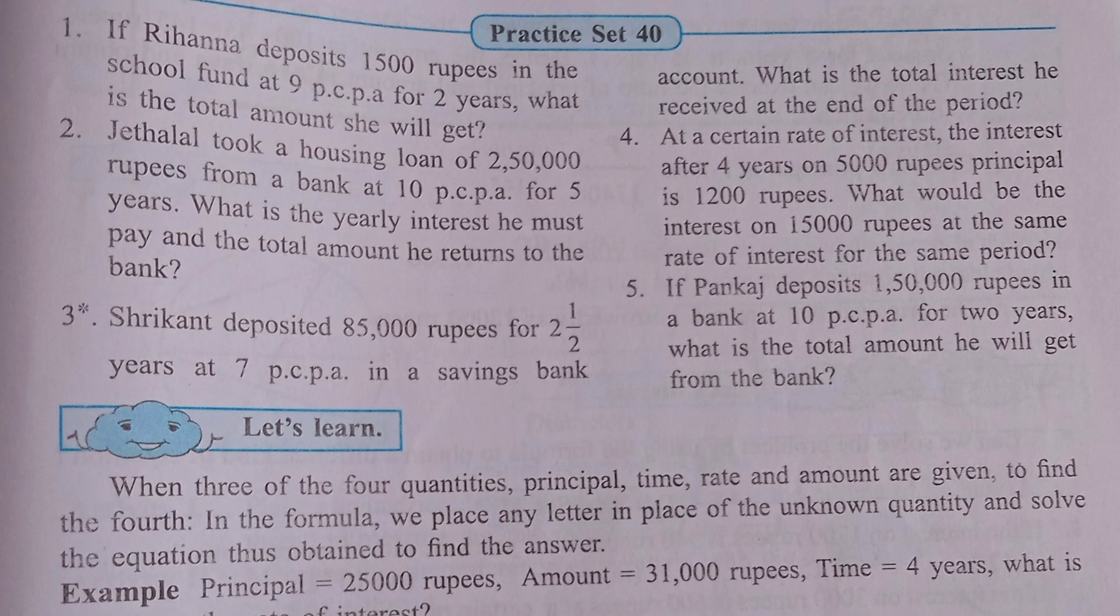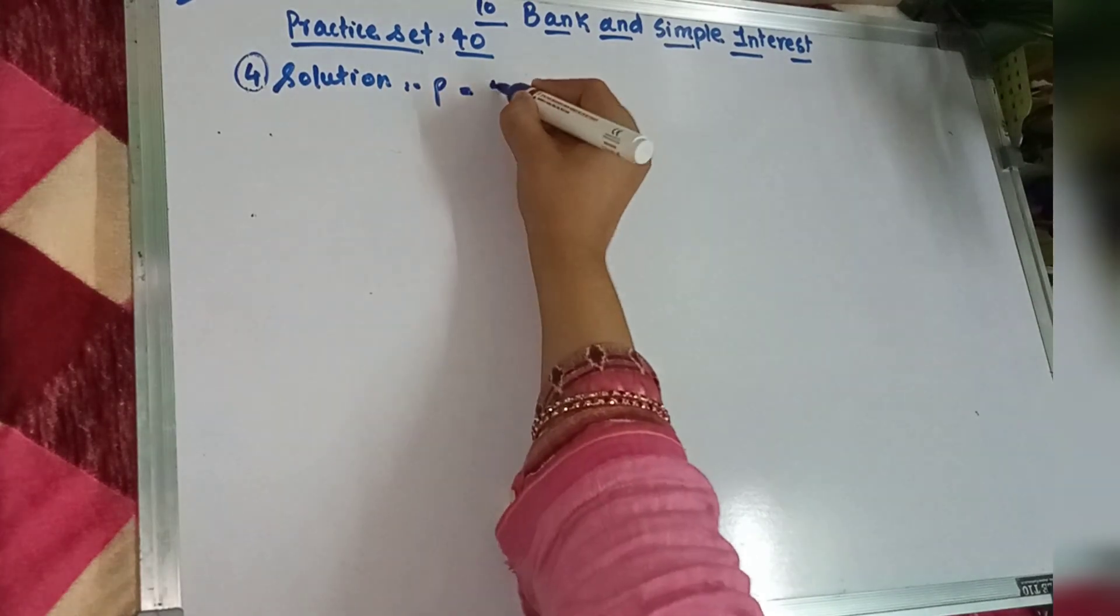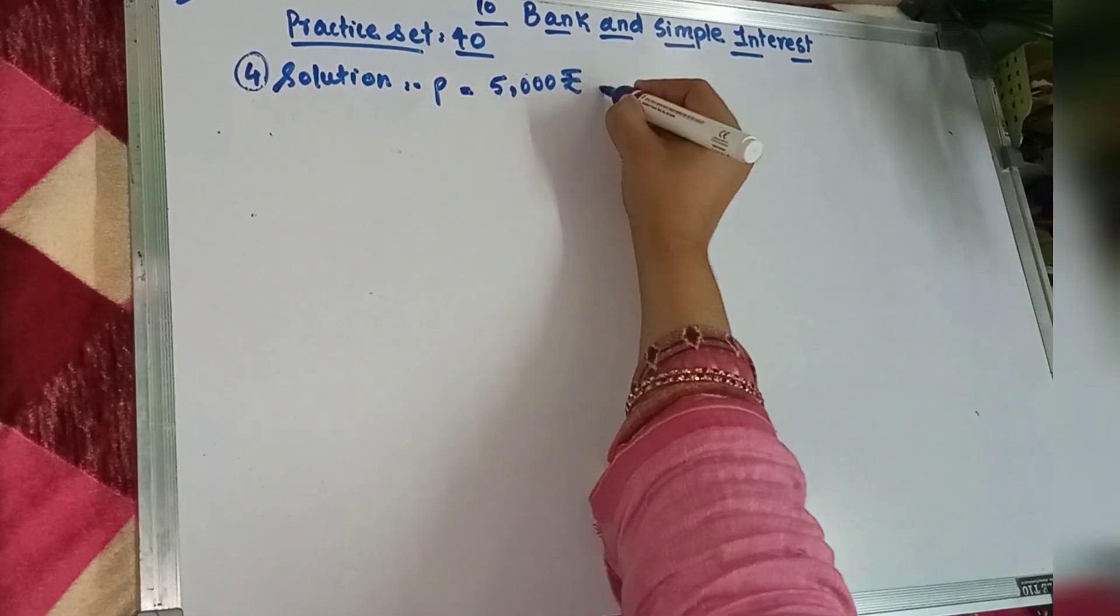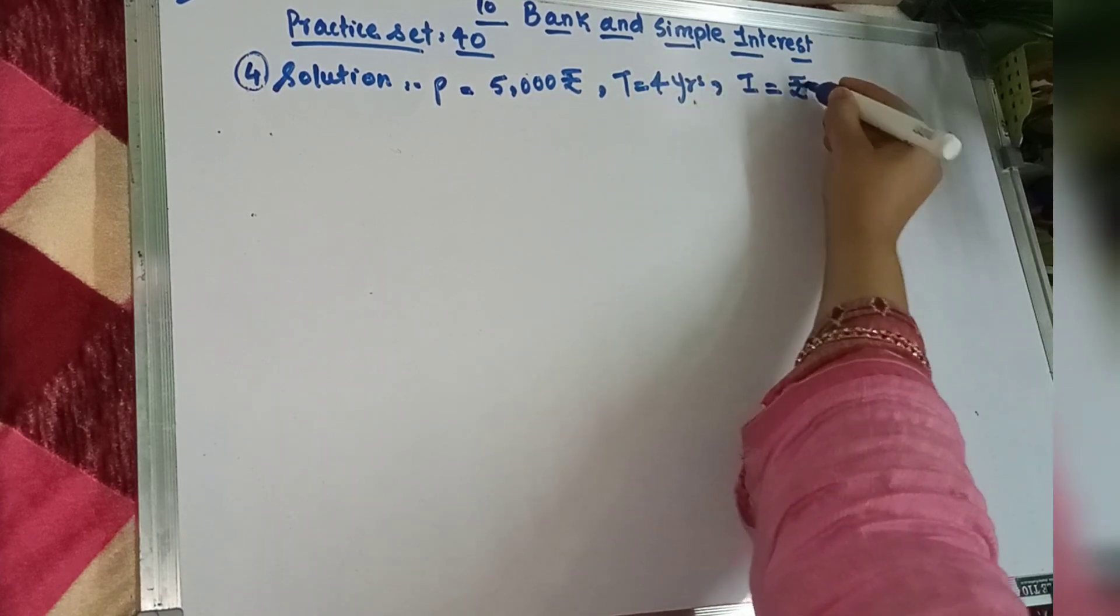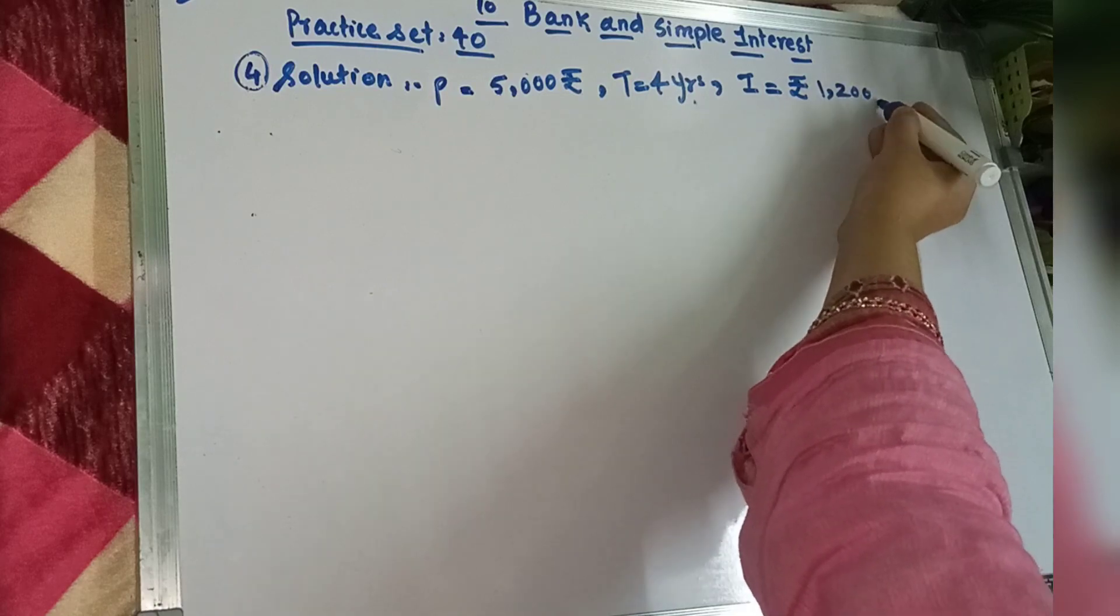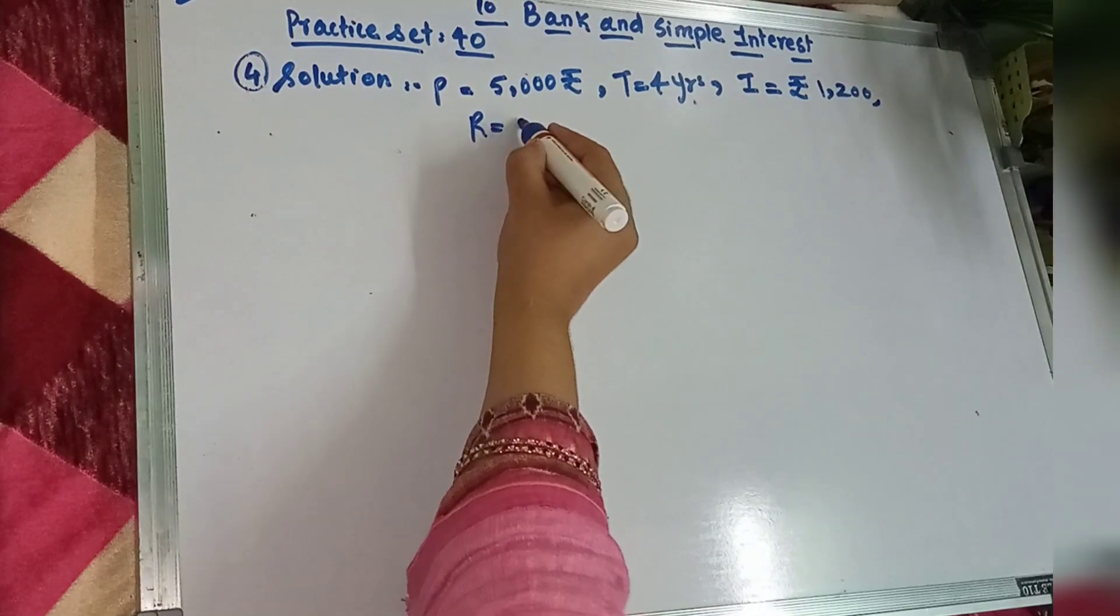Question number 4. The interest on Rs. 5,000 for 4 years at a certain rate of interest is Rs. 1200. What would be the interest on Rs. 15,000 at the same rate of interest for the same period? Principal hai 5000, time diya hai 4 years, and interest diya hai 1200. Aapko find out karna hai rate.